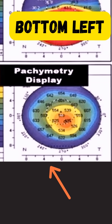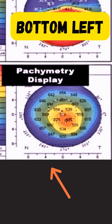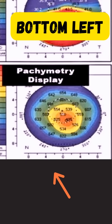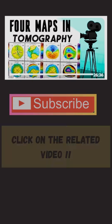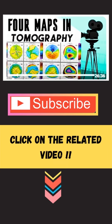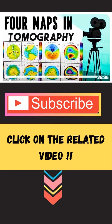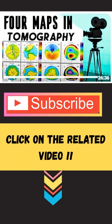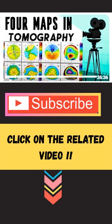Bottom left is the pachymetry display, which shows the corneal thickness, the thinnest point, and its location. All of these are important in screening for corneal ectasias. Want a full breakdown on the four maps in tomography and topography? Click on the related video and don't forget to subscribe.